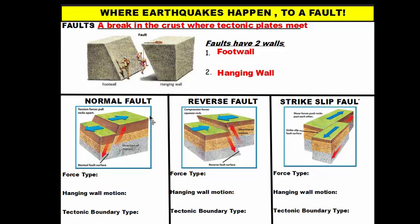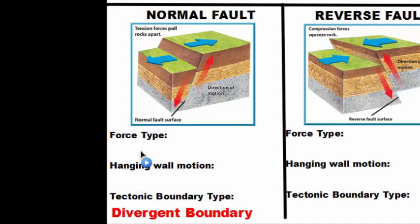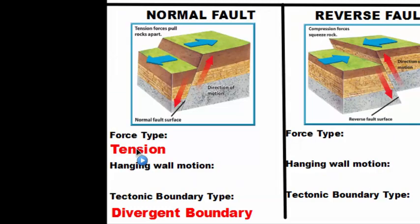The normal fault occurs at a divergent boundary, where the plates are moving away from one another. The force type is called tension — like a tug-of-war where two teams pull a rope tight from both ends. As a result of tension, the hanging wall slides down the fault, causing a normal fault.